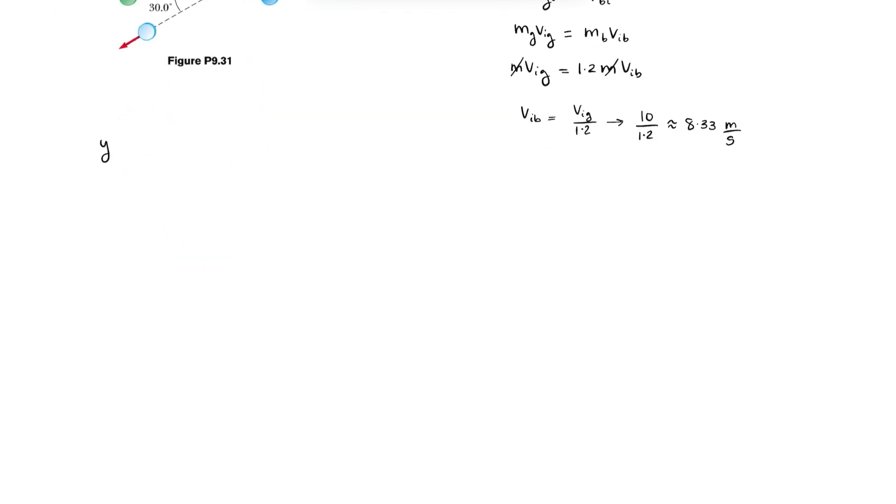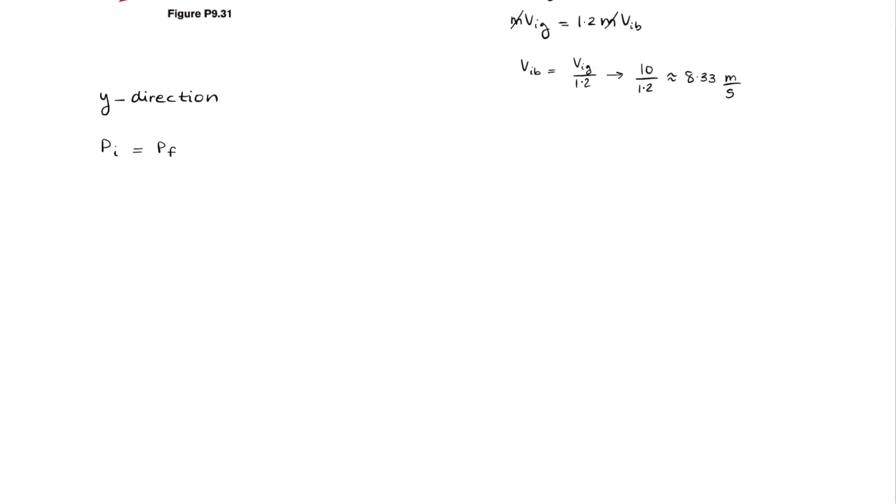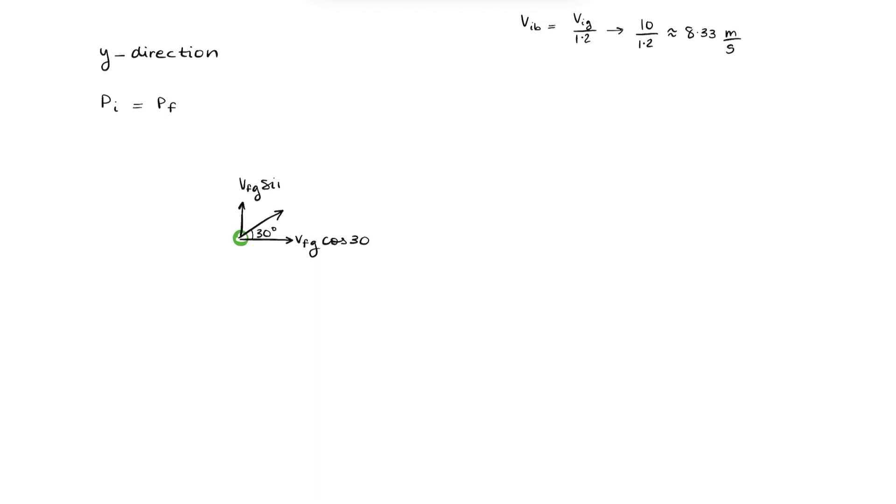So now we can sum up our momenta in the vertical direction or the y-direction, which is p-initial equals p-final. So let's break our velocity vectors into y and x components. So since there's a 30-degree angle, the adjacent angle would be velocity final of green times cos 30, which is the x component. And the y component would be that times sin 30 because this one is opposite to the angle.